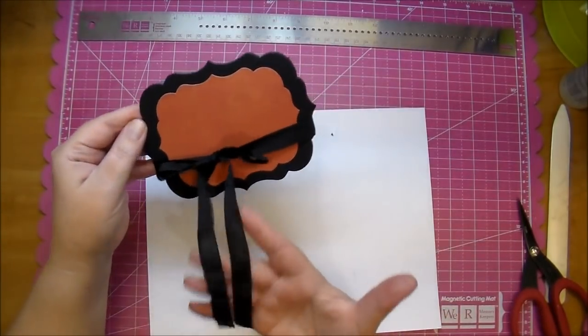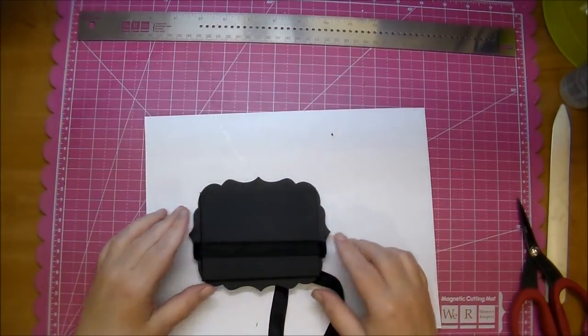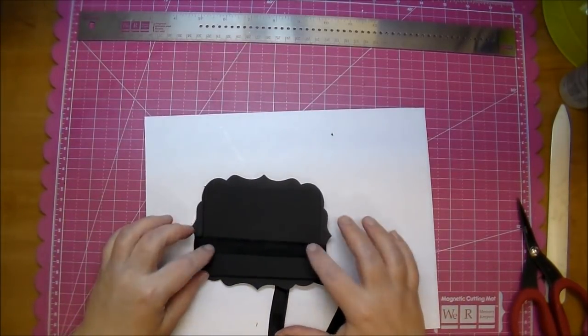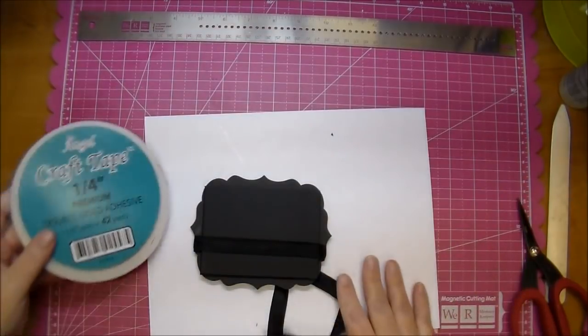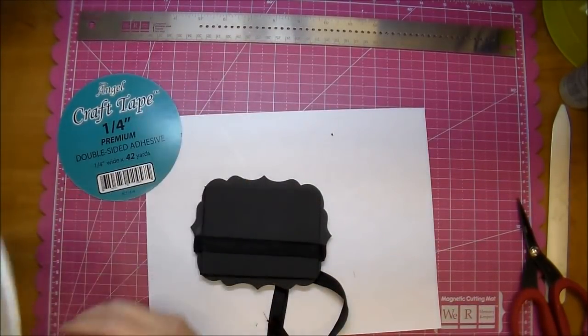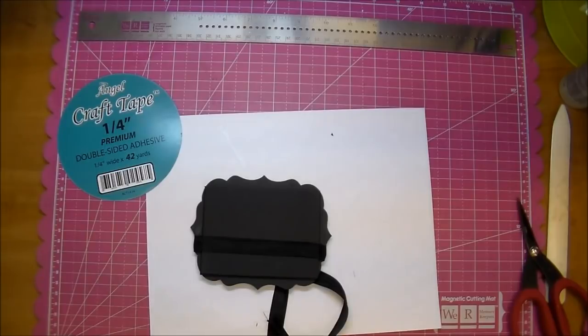Okay, once I'm happy with that, I'm not going to cut this off just yet. I'm going to go to the back and tape this down, and I'm going to use the Angel Craft tape, one quarter inch, to adhere it down. I want a strong adhesive to hold this piece down.